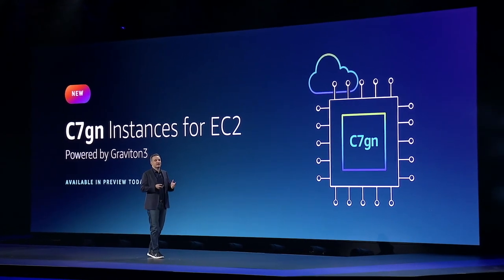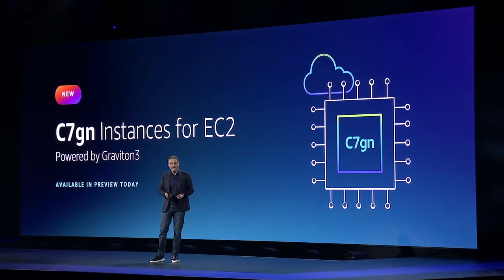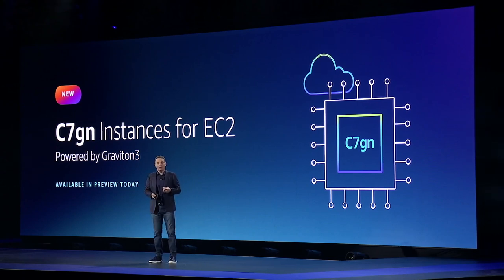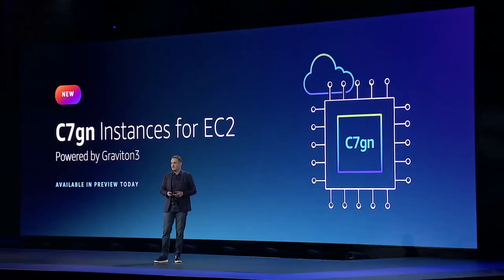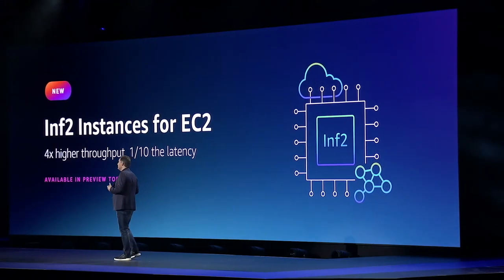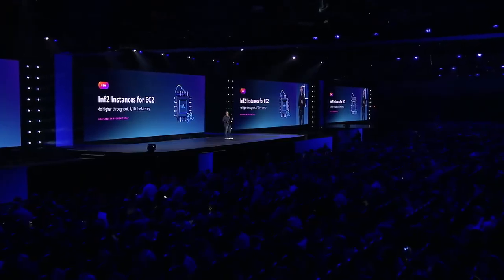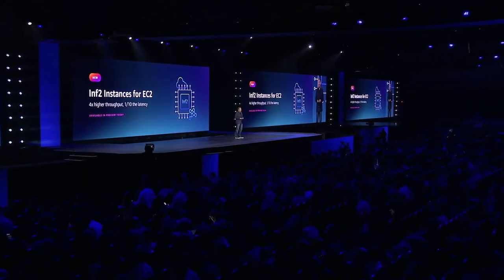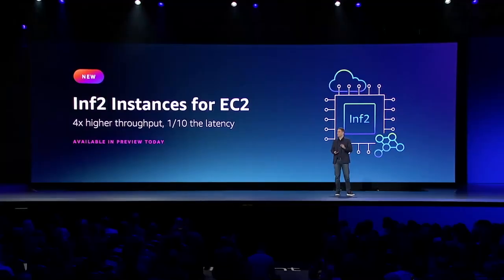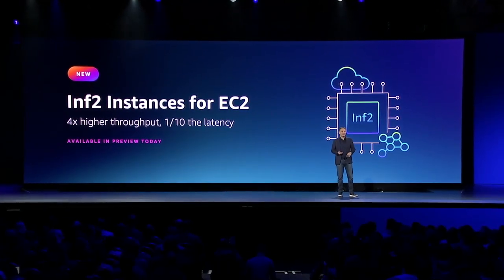Peter DeSantis announced the new C7GN instance powered by Graviton 3, which has over 200 gigabits per second network bandwidth and up to 50% higher packet processing over existing network-optimized instances, making it ideal for network-intensive workloads like analytics, databases, and network appliances. I'm also excited to announce the preview of our INF2 instance powered by our new Inferentia 2 chip. Customers can deploy a 175 billion parameter model for inference on a single INF2 instance with four times higher throughput and one-tenth the latency of INF1 instances.